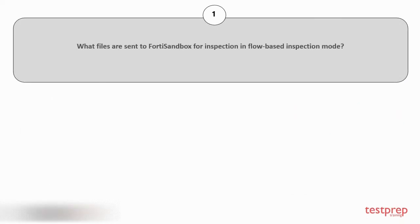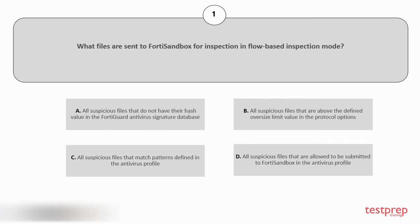Question number 1. What files are sent to FortiSandbox for inspection in flow-based inspection mode? Your options are: A) all suspicious files that do not have their hash value in the FortiGuard antivirus signature database; B) all suspicious files that are above the defined oversize limit value in the protocol options; C) all suspicious files that match patterns defined in the antivirus profile; D) all suspicious files that are allowed to be submitted to FortiSandbox in the antivirus profile.